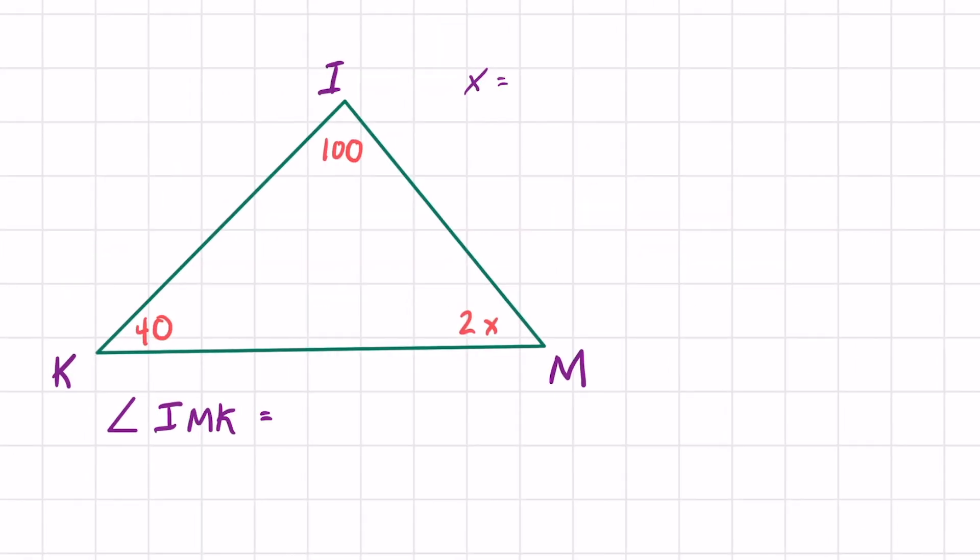Let's move on to example number two. We got triangle KIM. First we want to find out x by setting up an equation. All you got to do is take everything in the inside, write an expression when you add them all up: 40 plus 100 plus 2x, and it doesn't matter what order you do it, equals 180.